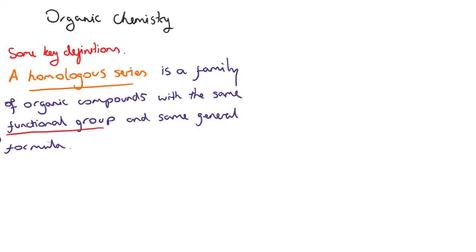The first one is what's called a homologous series. And what we know about a homologous series is that it's a family of compounds essentially with the same functional group and the same general formula. I mentioned the functional group briefly in the first video. A functional group is essentially an atom or a group of atoms that are responsible for the chemical properties of that substance, so the way it interacts with other molecules.